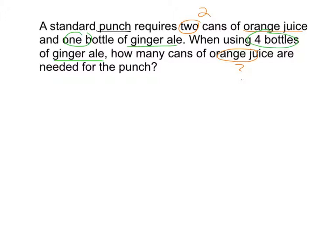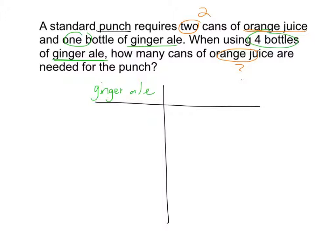So where do we start? We need to figure out what is the relationship — what are the two things that are being compared to one another? We have orange juice and ginger ale. So let's put this information into our table. Ginger ale we'll put in the left column, and let's put orange juice in the right column.